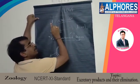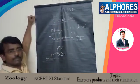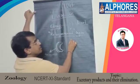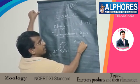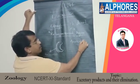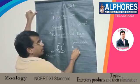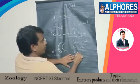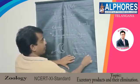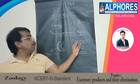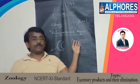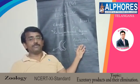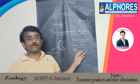Based on their excretory products, organisms in nature are categorized as ammonotelic, ureotelic, and uricotelic. Ammonotelic animals excrete ammonia as their excretory product; ureotelic animals excrete urea; and uricotelic animals excrete uric acid.